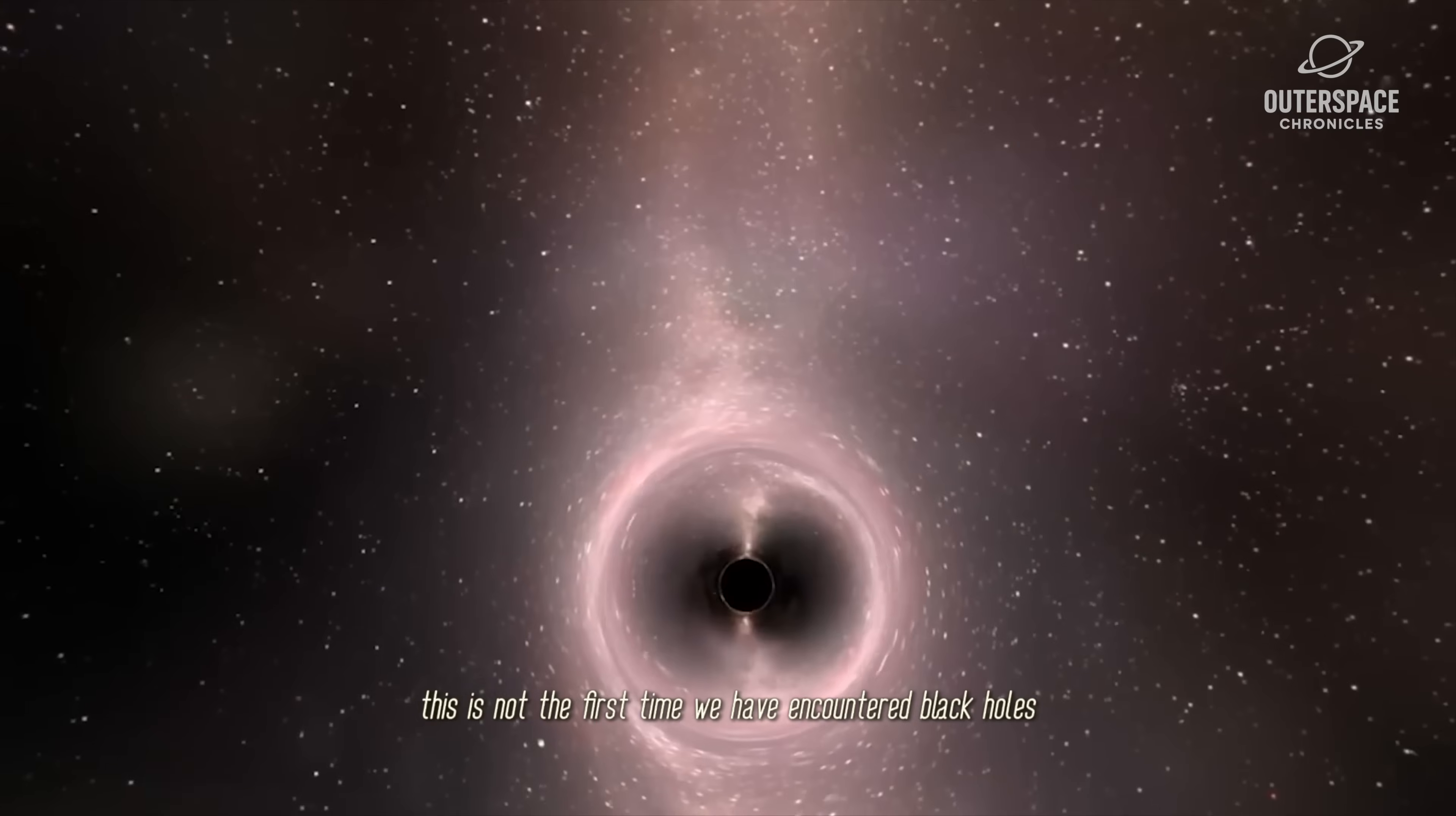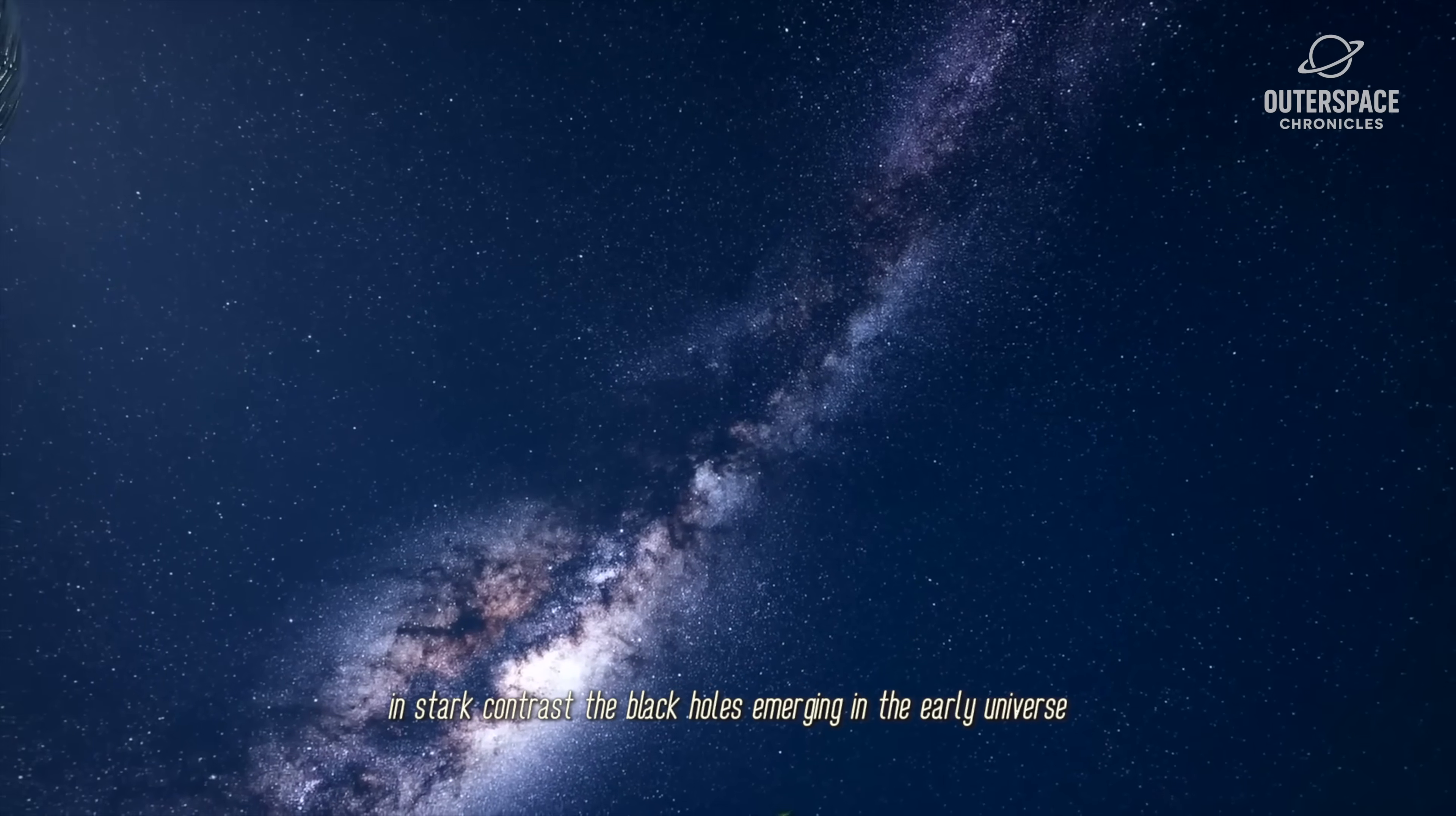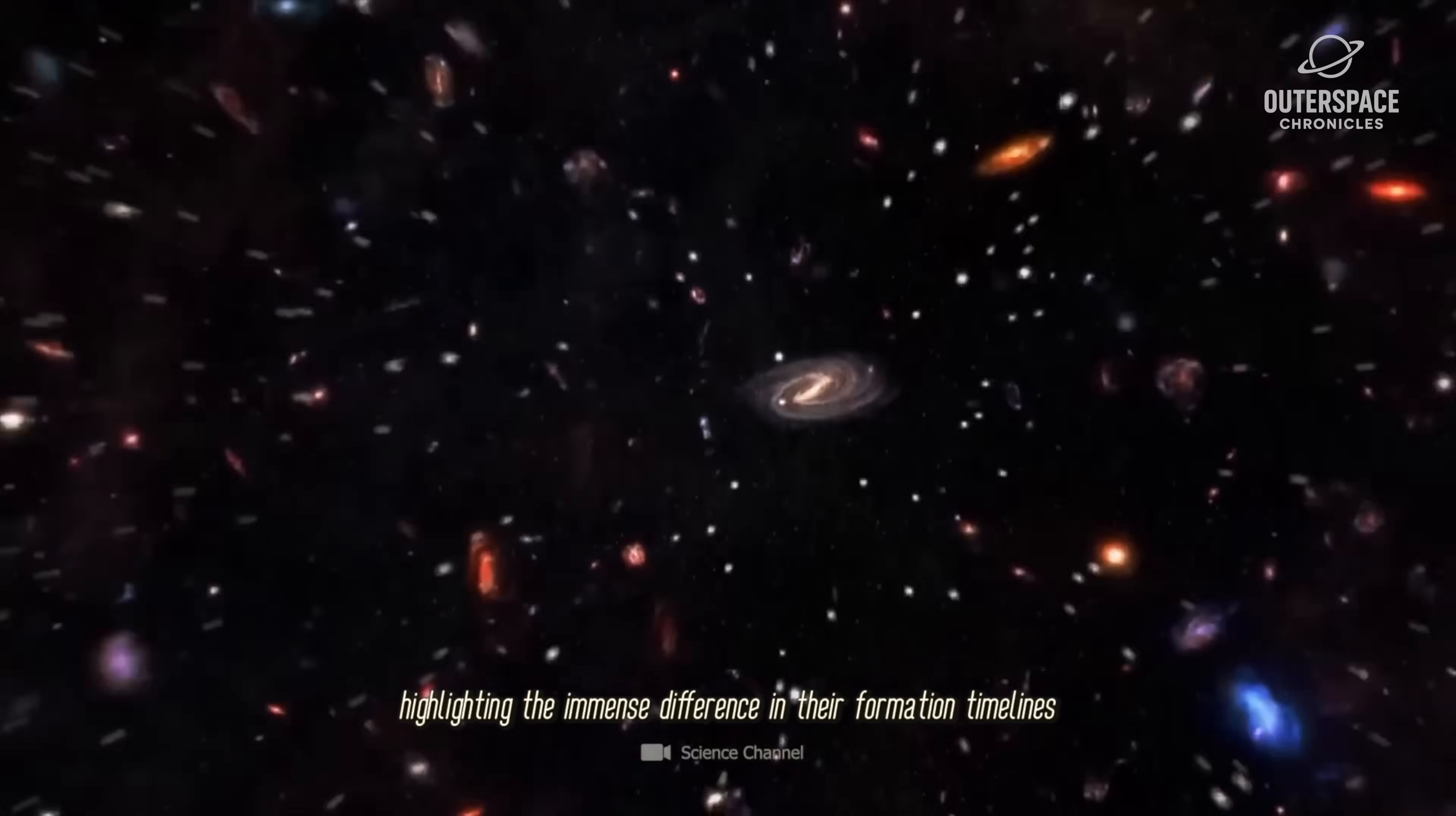Interestingly, this is not the first time we have encountered black holes in a dormant state. Within our galactic vicinity, the Gaia BH-3 black hole was discovered by the European Space Agency's Gaia mission. With a mass roughly 33 times that of our sun, Gaia BH-3 is categorized as inactive. It doesn't have a companion star from which to accrete matter, making it particularly difficult to identify. In stark contrast, the black holes emerging in the early universe present a completely different scenario. These primordial black holes are much more massive and originated when the universe was less than a billion years old. To put it in context, Gaia BH-3 resides within a comparably mature galaxy that has evolved nearly 13.8 billion years after the Big Bang, highlighting the immense difference in their formation timelines.